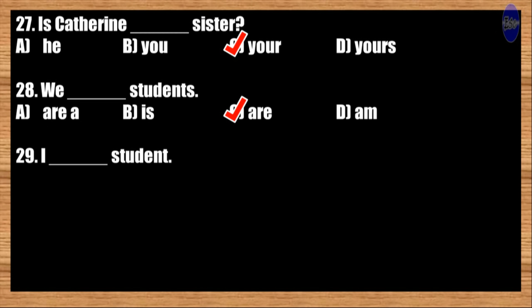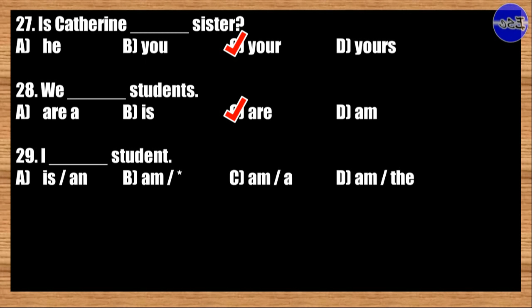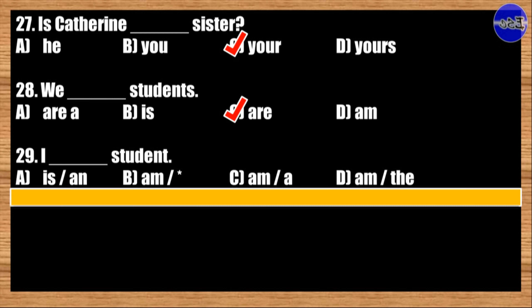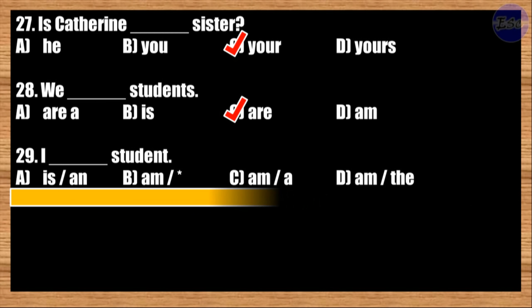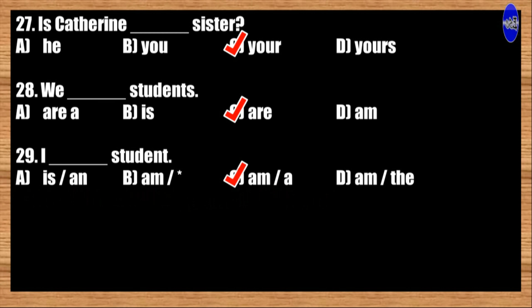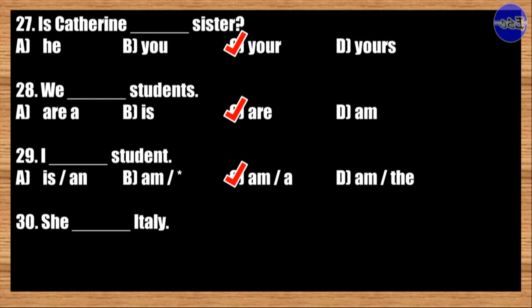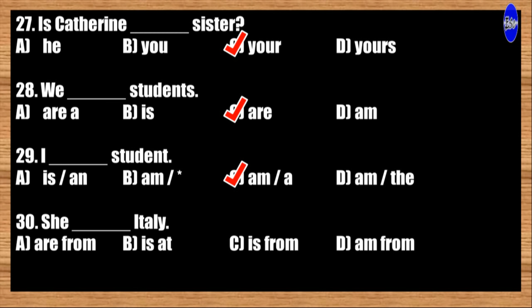Number twenty-nine: I blank student. A: is an; B: am; C: am a; D: am the. The correct answer is option C. I am a student.